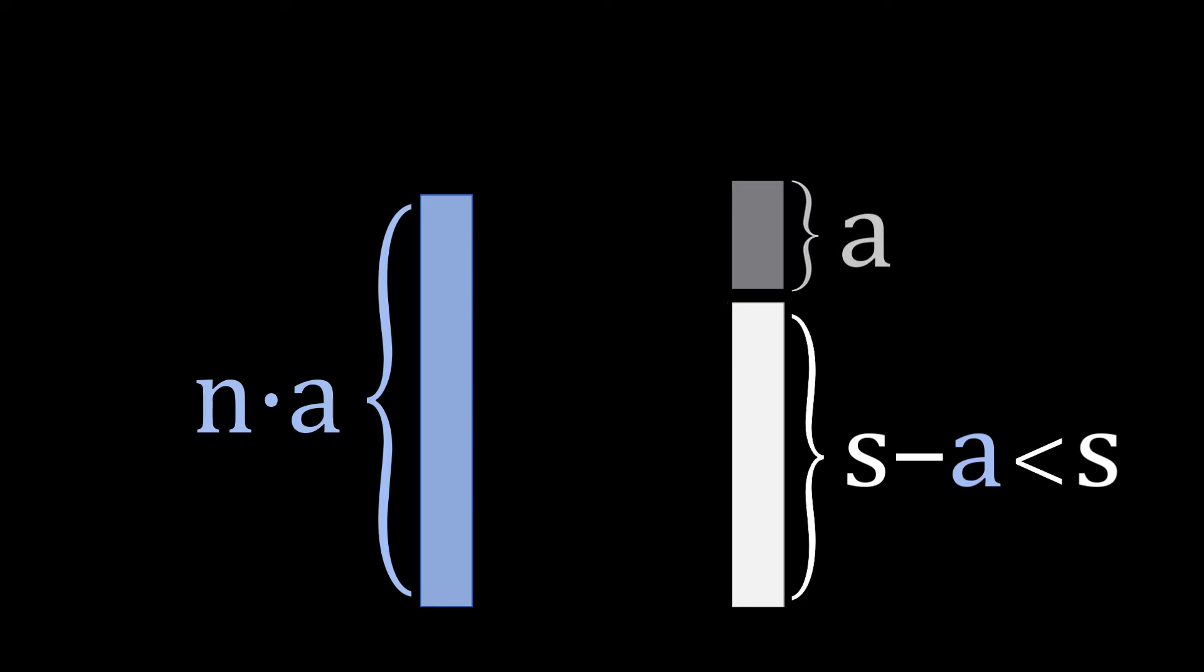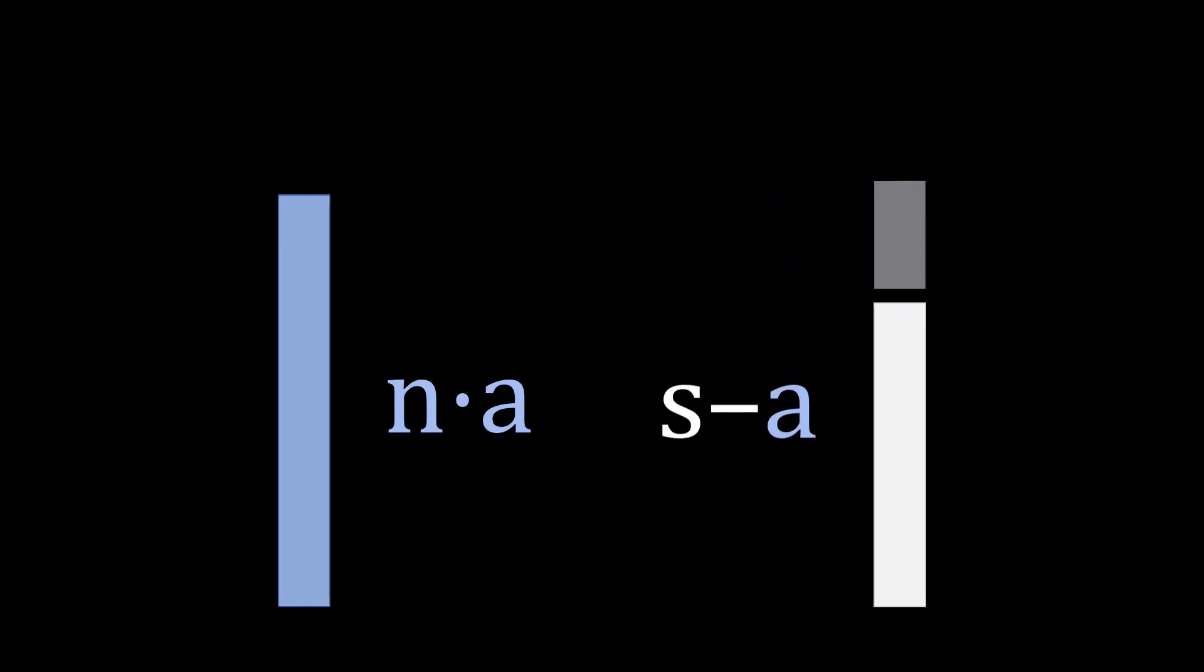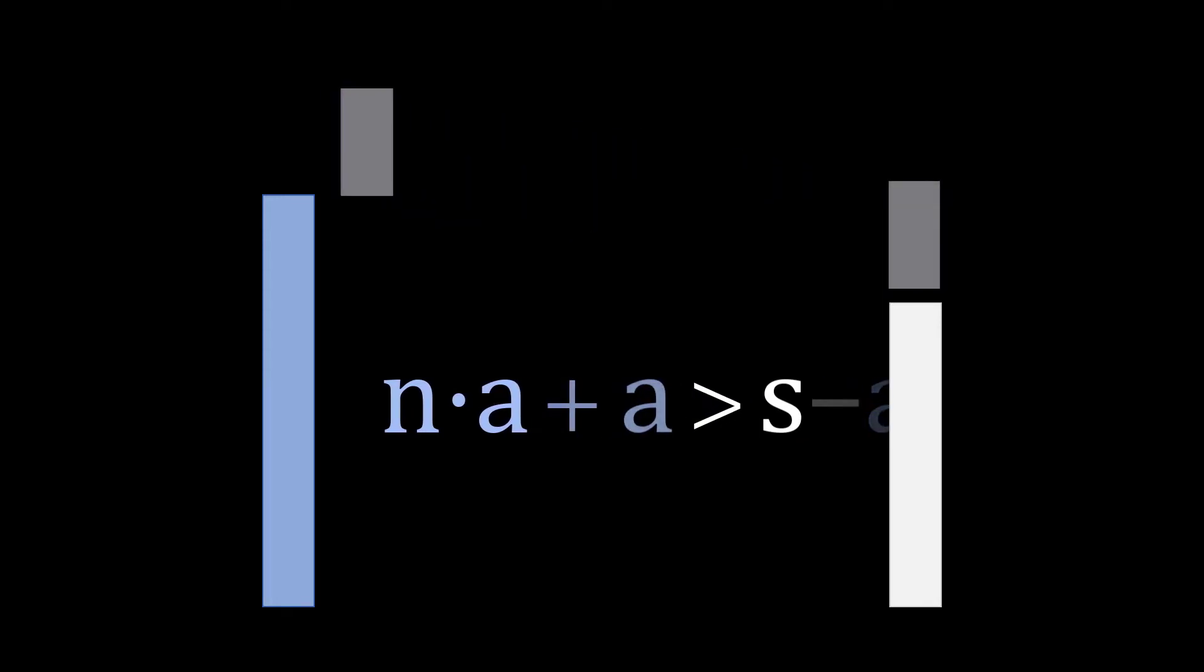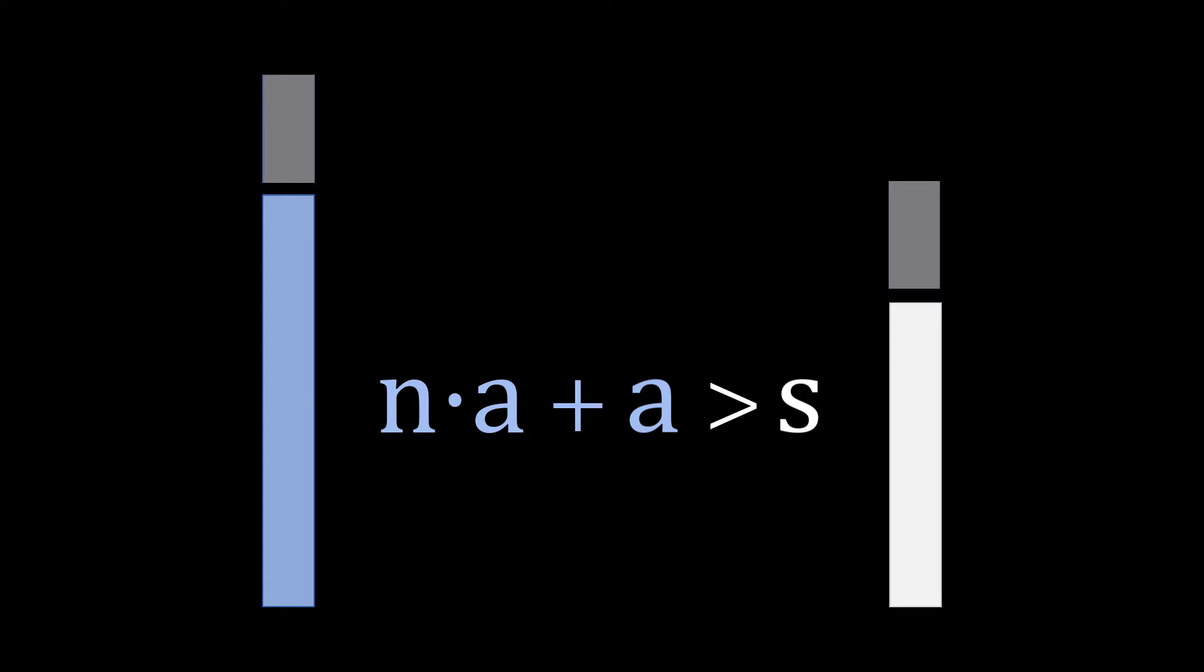There's an exception, a scaling factor N, for which NA is taller than S-A. But, if some NA is taller than S-A, then it's also true that NA plus A more floors should be taller than S.